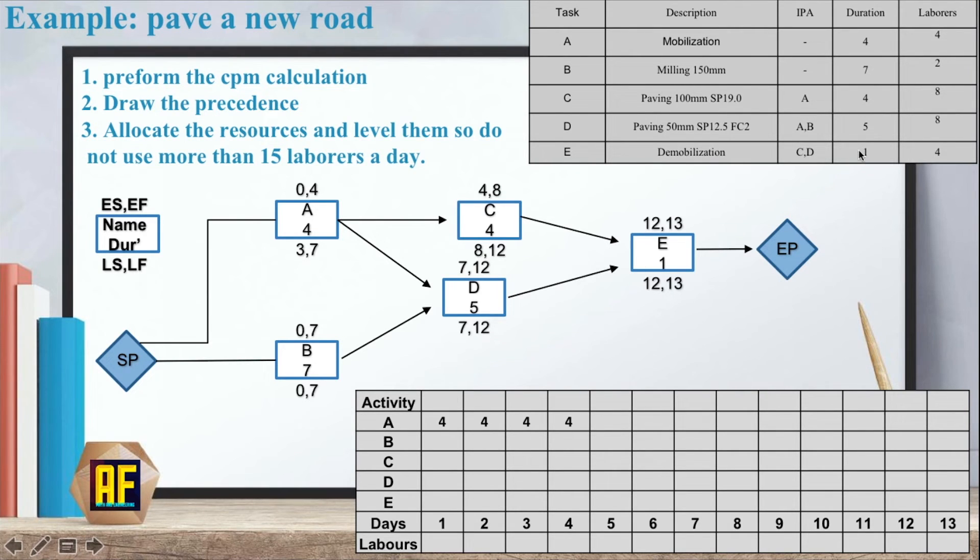And now we are going to start placing the number of labors for each activity. So for activity A we had 4 labors for 4 days. Which means that for the first day, second day, third day and fourth day, we need 4 labors for each day. Now activity B. Activity B also starts from the first day and goes on for 7 days. From 0 till 7. And it needs only 2 labors. So this is why we have the number 2 over here.